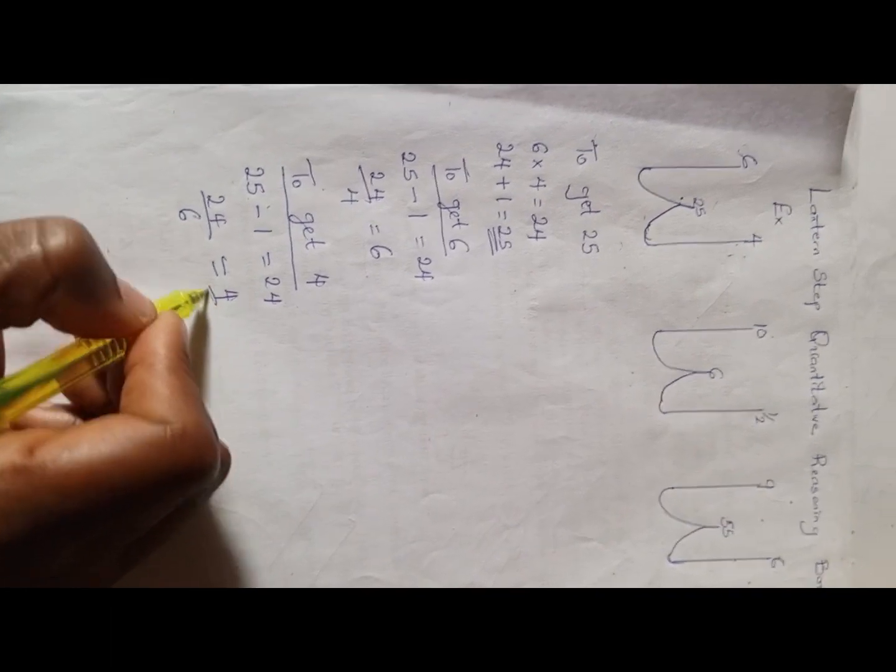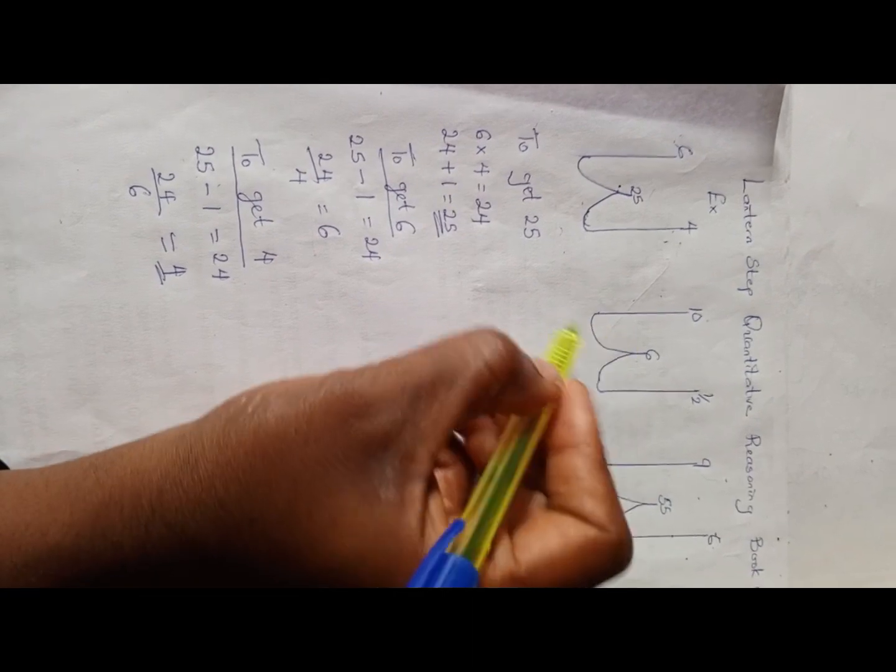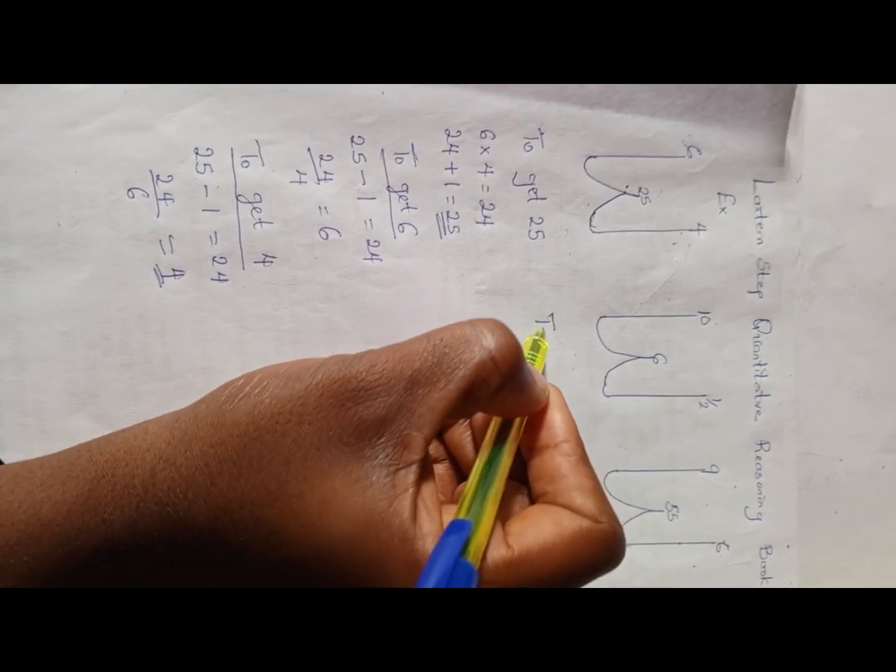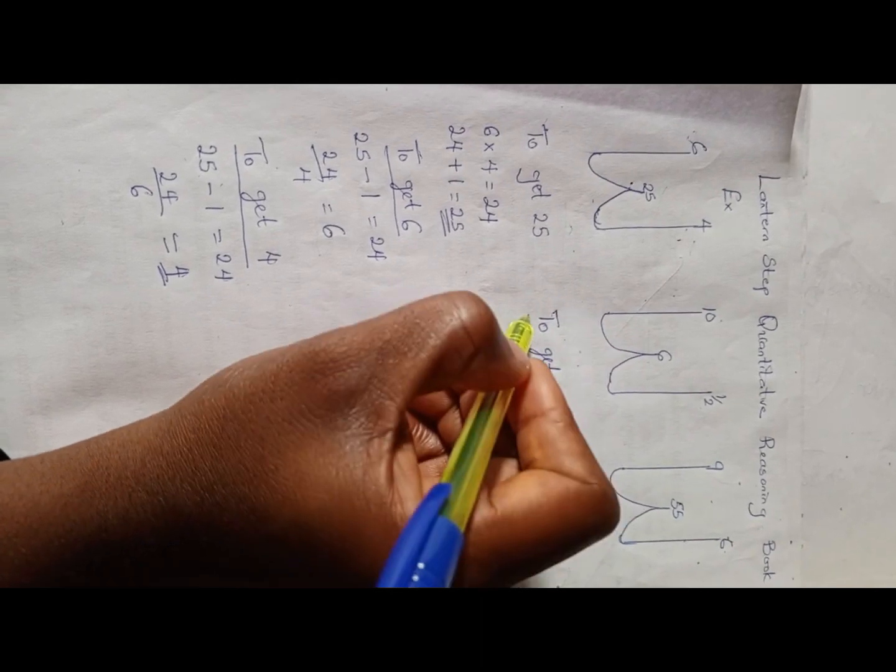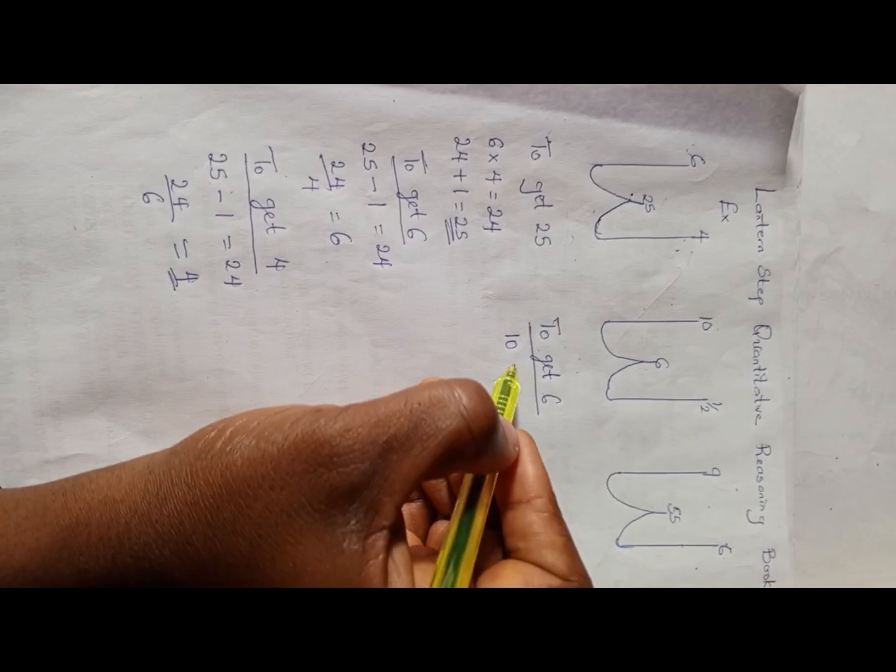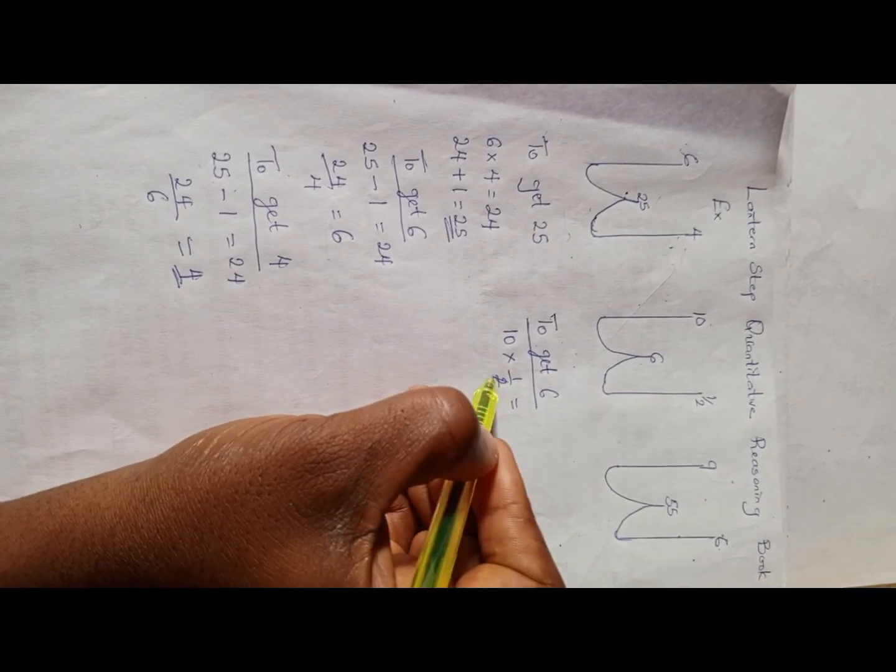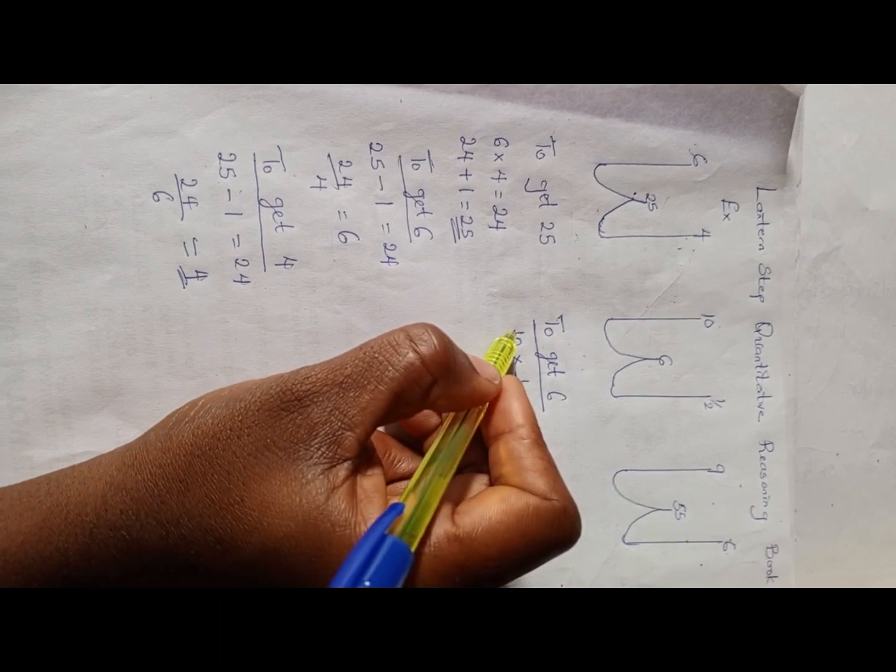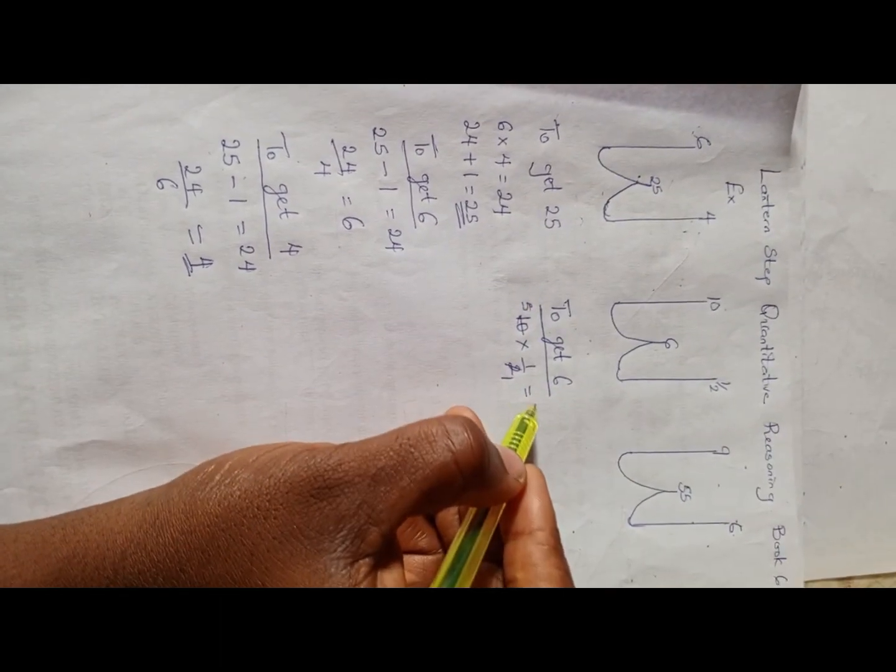So as you can see, it worked here. Let's try the same method for this. To get 6, we have 10 times 1/2. 10 times 1/2, we can have 2 here, and 2 will go into 10 as 5. So we have 5 times 1 is 5, and 5 plus 1 is 6.